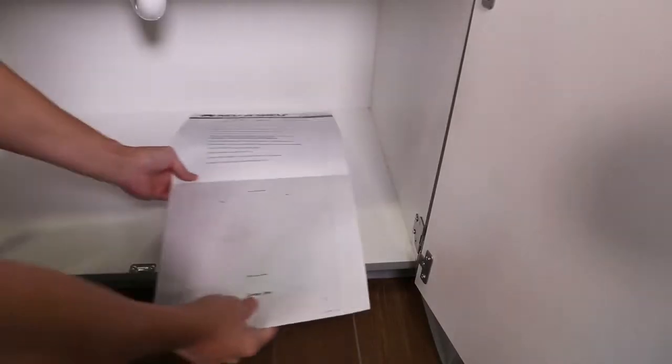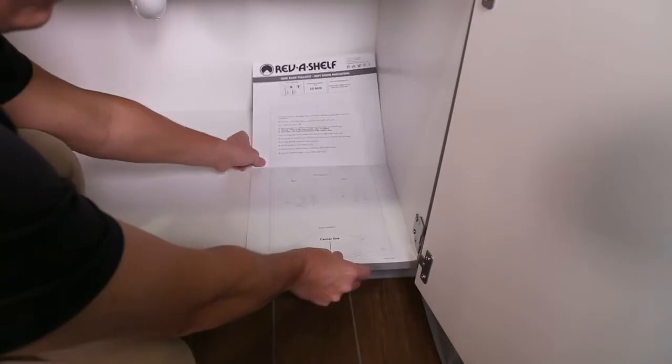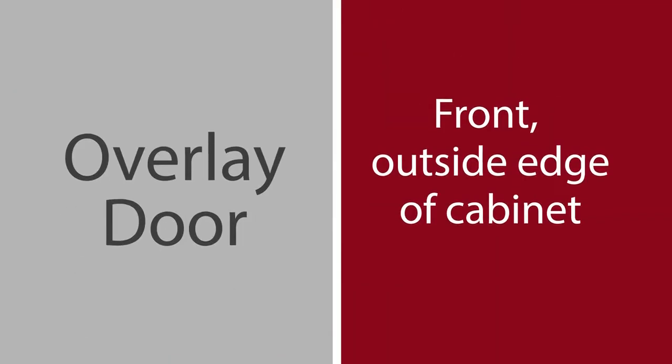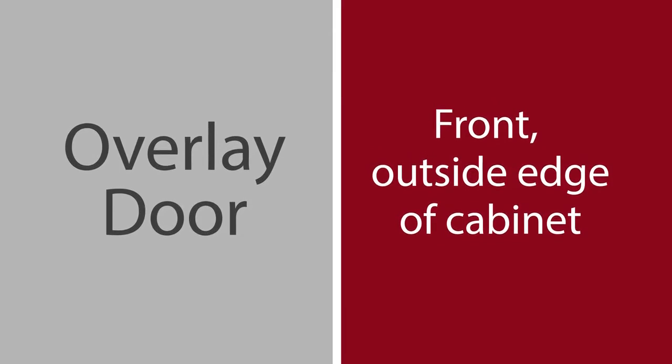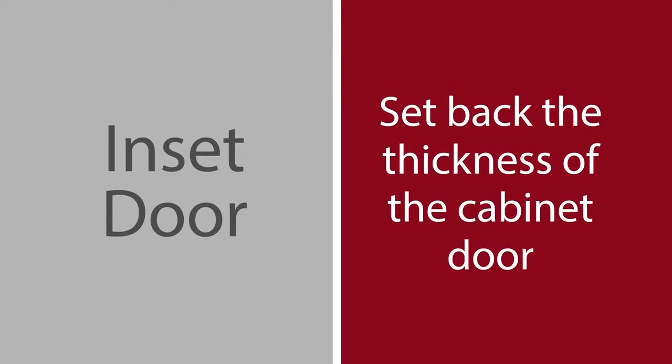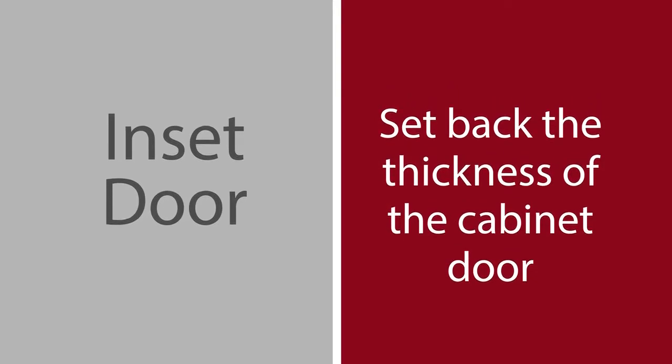Place the template inside the cabinet and align the front edge per cabinet type. For an overlay door, place at the front outside edge of the cabinet. For an inset door, set back the thickness of the cabinet door.